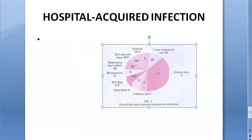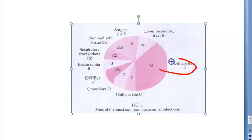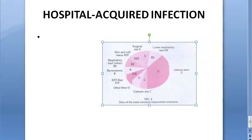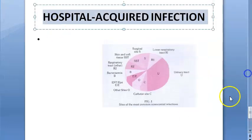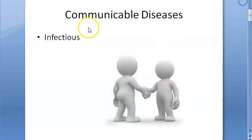Hospital-acquired infections, or nosocomial infections, receive special attention. Hand washing and hygiene can prevent these. Examples include urinary tract infections, lower respiratory tract infections, and surgical site infections. Be very careful about hospital-acquired infections and take hygiene precautions.